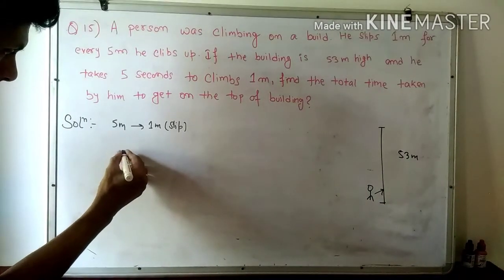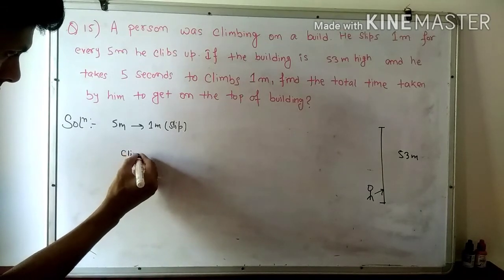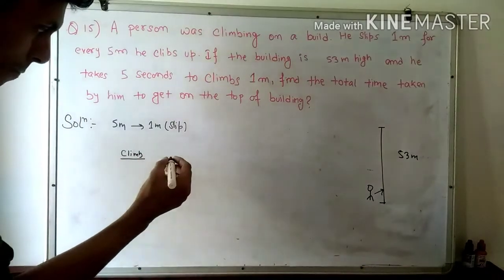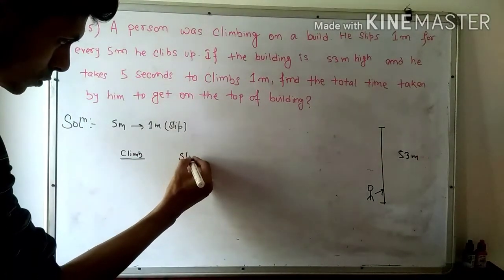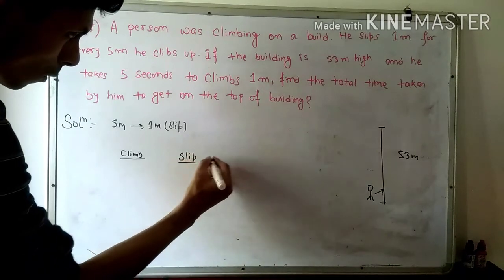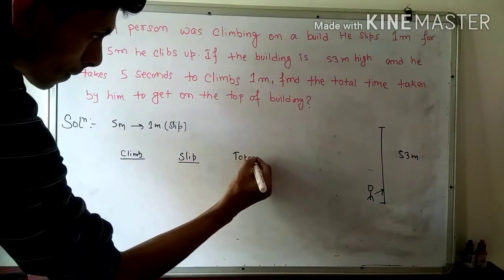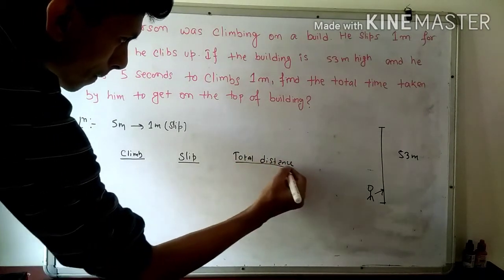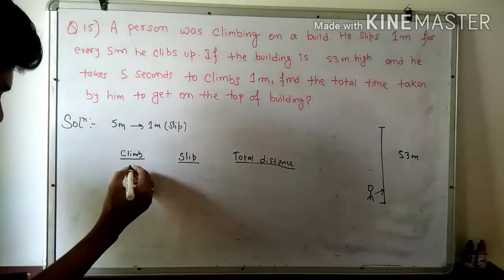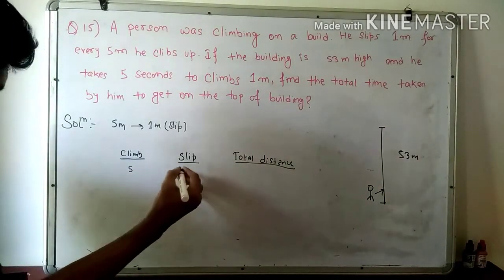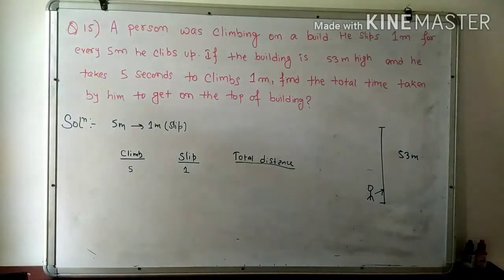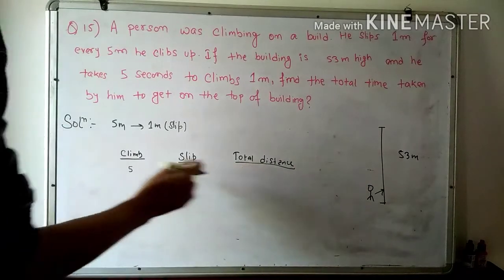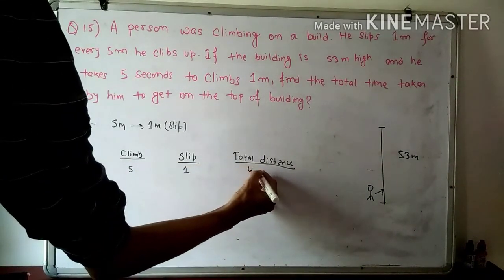This is the climb distance, this is the slip distance, and this is the total distance. Starting: when you climb 5 meters and slip 1 meter, how much is the actual net distance? 5 minus 1 equals 4 meters.